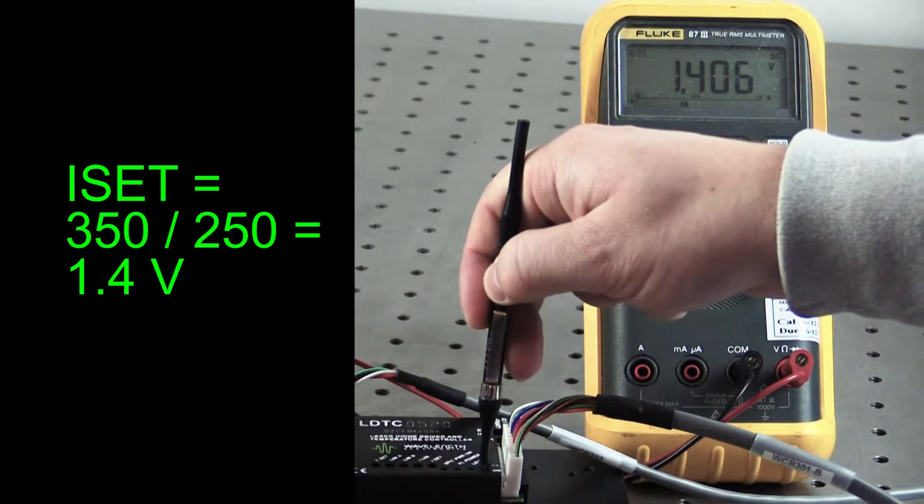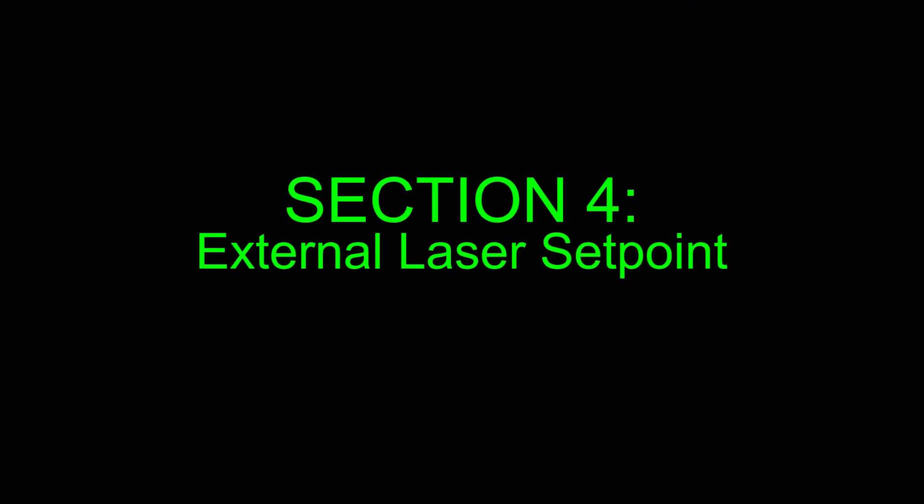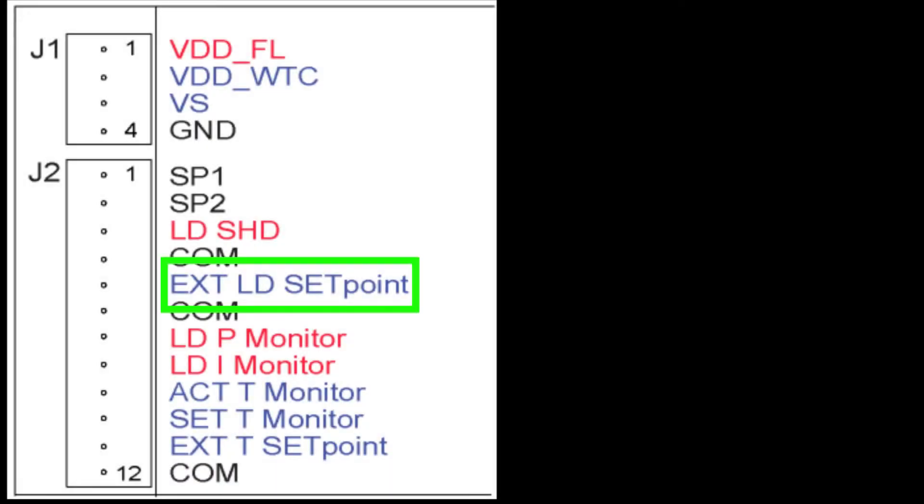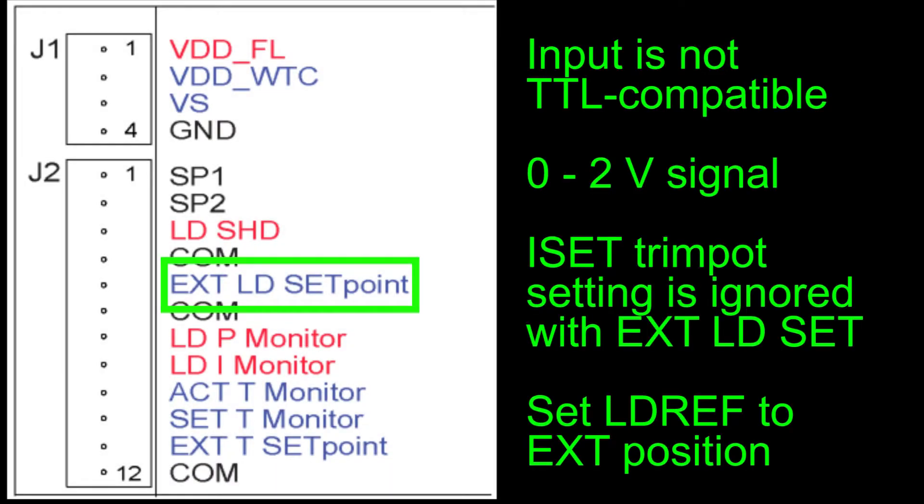To vary the set point with time, we attach a function generator to EXT LD SET. It expects a signal from 0 to 2 volts. When using an external set point signal, the onboard ISET trim pot setting is ignored. Move the LD REF DIP switch to the external position and attach the function generator to EXT LD SET and GND.